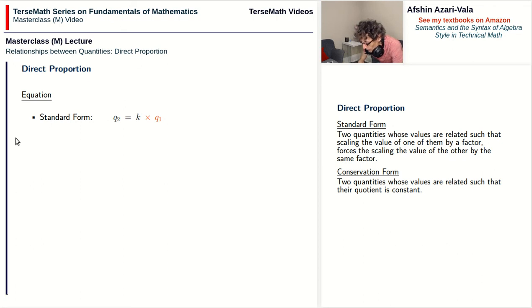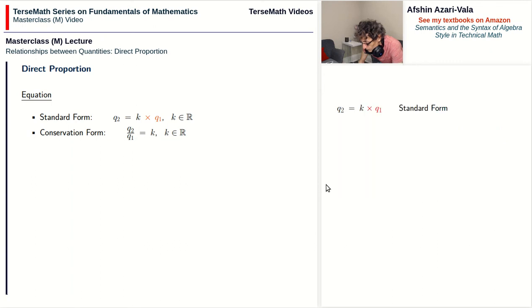The conservation form can be written as q2 divided by q1 is equal to k, with k in R. Now we can go from the standard form to the conservation form by rearranging the equation. Here, to isolate k, which is what we need for the conservation form, we take times q1 and move it to the other side and turn it into divide by q1.